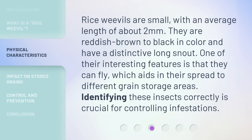Rice weevils are small, with an average length of about 2 millimeters. They are reddish-brown to black in color and have a distinctive long snout. One of their interesting features is that they can fly, which aids in their spread to different grain storage areas. Identifying these insects correctly is crucial for controlling infestations.